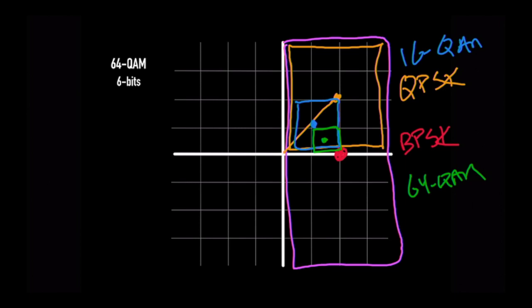Thanks for watching. I hope you understand at least a little bit better of how we can have a single waveform represent anything from a single bit, to two bits, to four bits, to six bits, or with 256-QAM up to eight bits. Thank you.